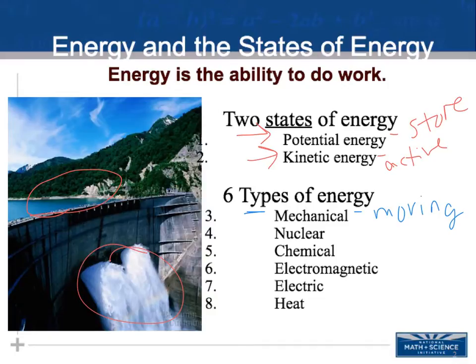The next type of energy is nuclear energy — energy contained in the nucleus of an atom, released during an atomic reaction. This is what's in an atomic bomb and what powers a nuclear power plant. They try to harness nuclear energy and transform it into electrical energy.